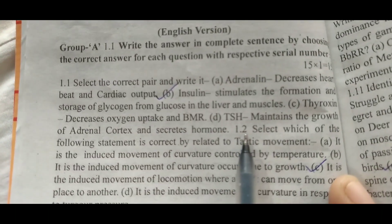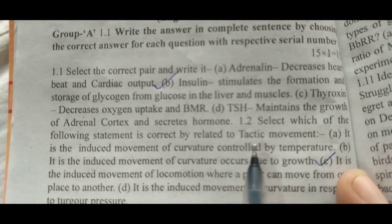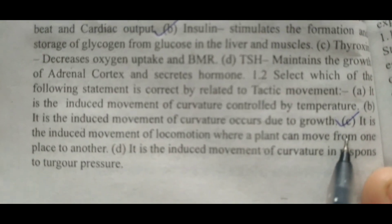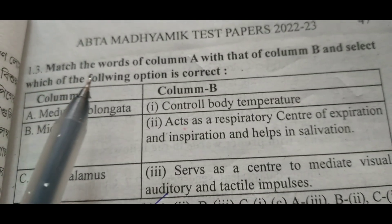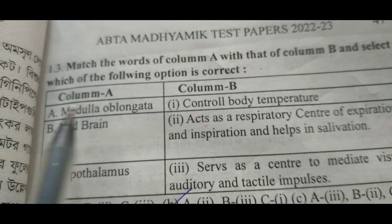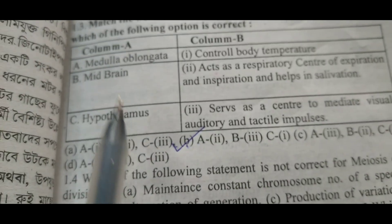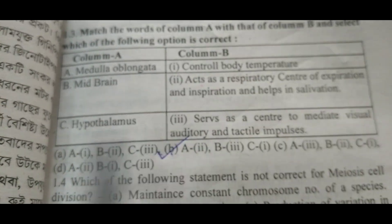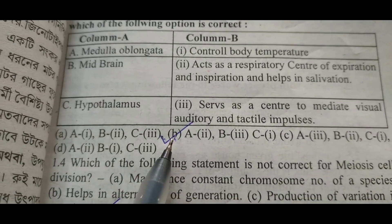Next, 1.2: Select which of the following statement is correct related to tactic movement. Right answer C. Next, 1.3: Match the words of column A with that of column B and select which of the following options is correct. A with 2, B with 3 and C with 1. So right answer will be B.